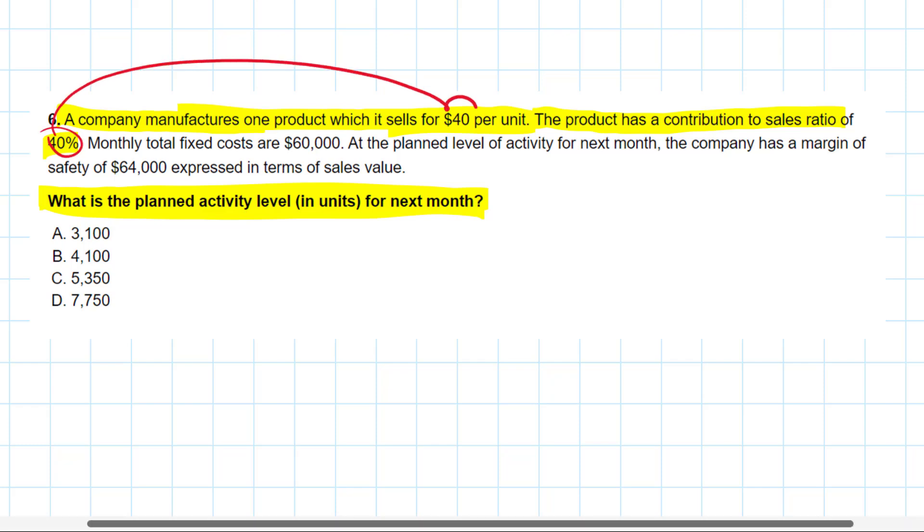With this information, I can get a contribution per unit. Now they tell me this. The monthly fixed costs are $60,000. And with the contribution per unit that we calculate here, we could get the break even point in units. I think I see where this is going now. The final sentence ties it all together. At the planned activity for next month, or at the budgeted activity, we have a margin of safety of $64,000 expressed in sales value.